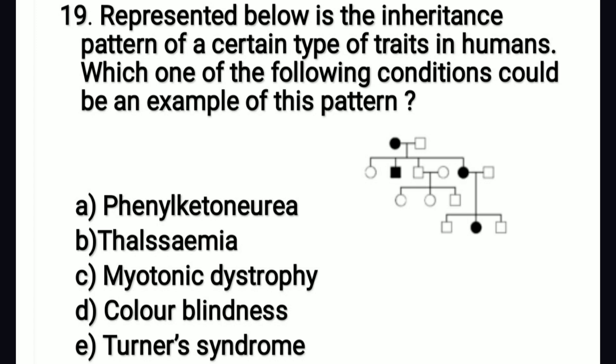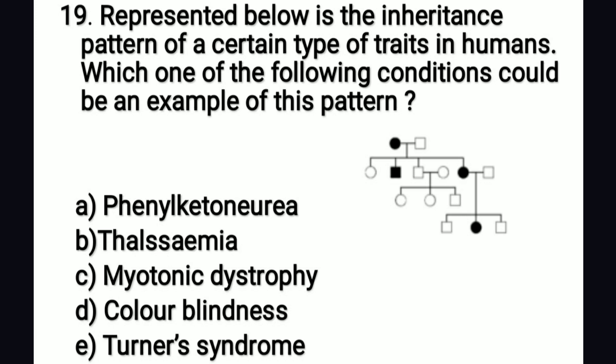Given the inheritance pattern of a certain type of trait in humans, which of the following conditions could be an example of this pattern? The right answer is option C — myotonic dystrophy, an autosomal dominant trait. When one parent is affected, the trait is inherited by the next generation; unaffected parents cannot pass the disorder to the next generation.